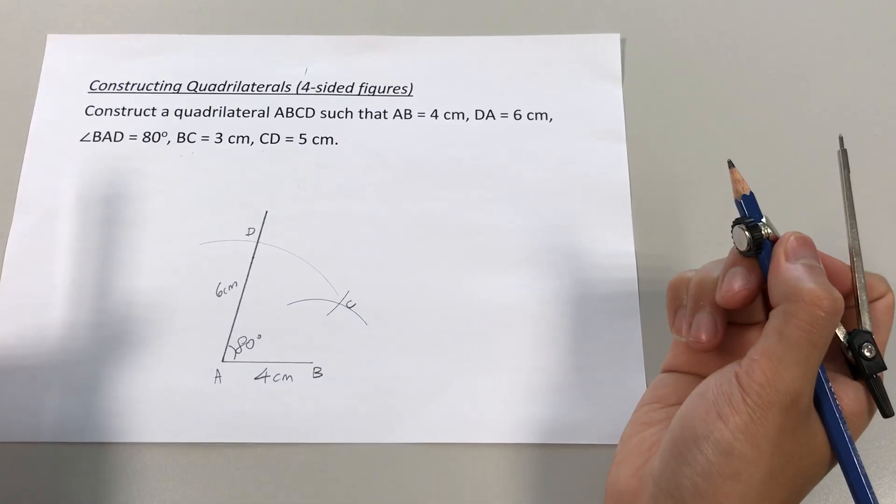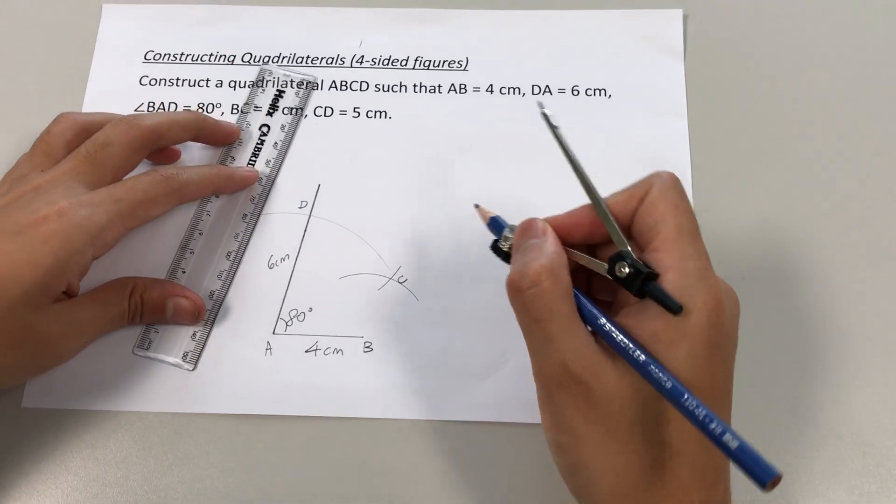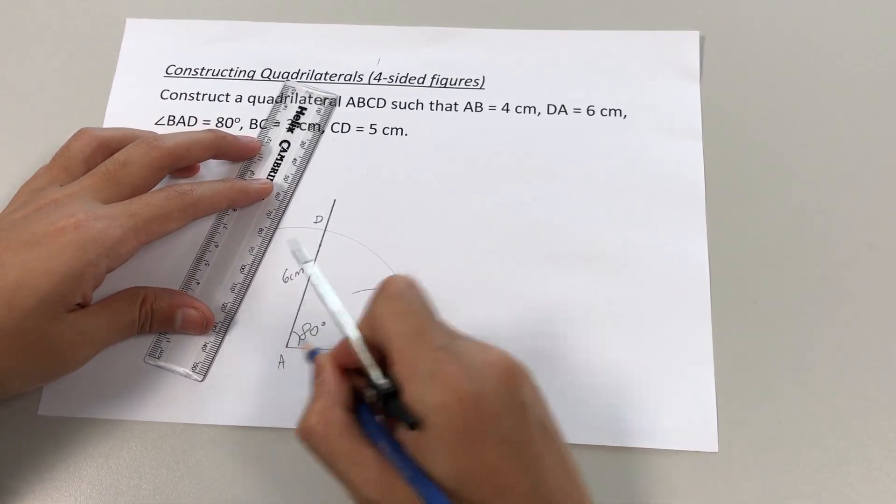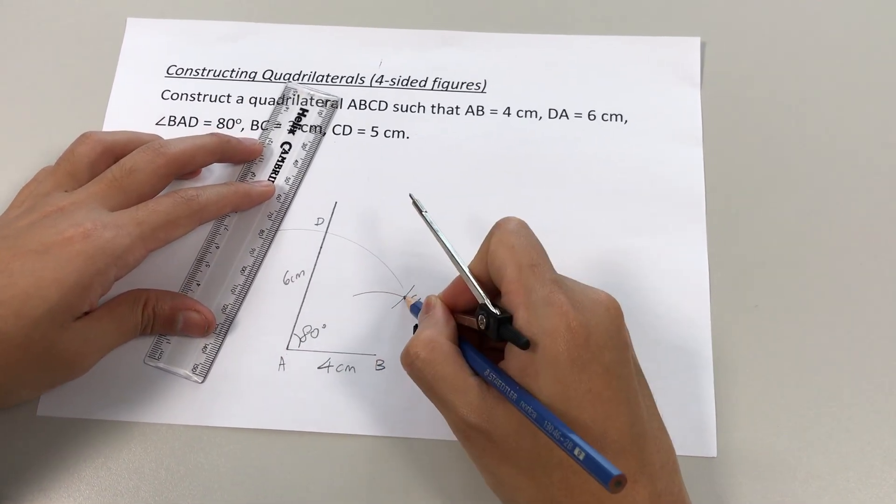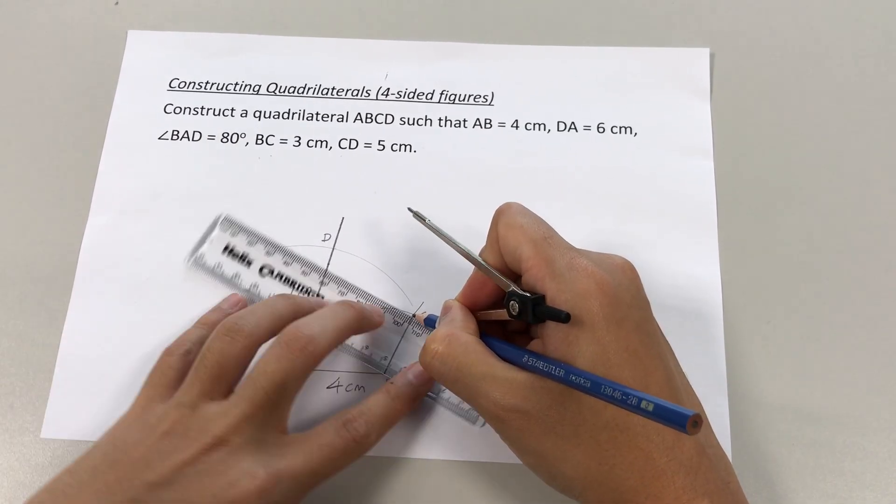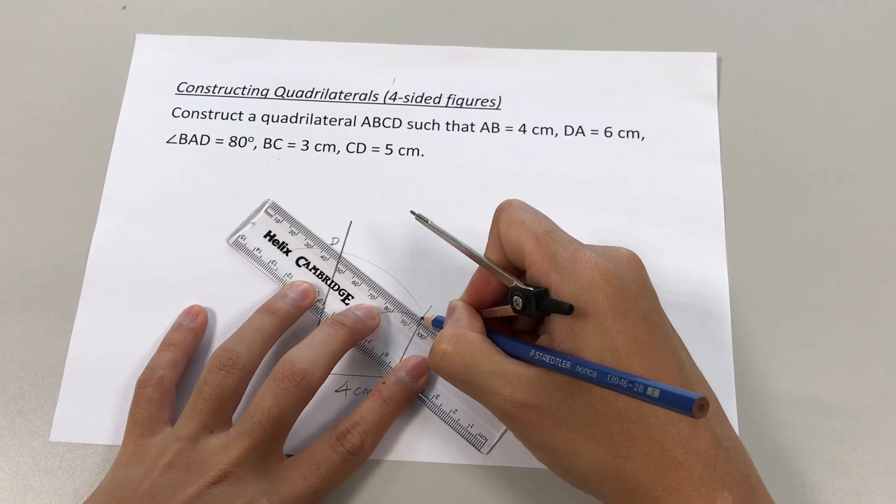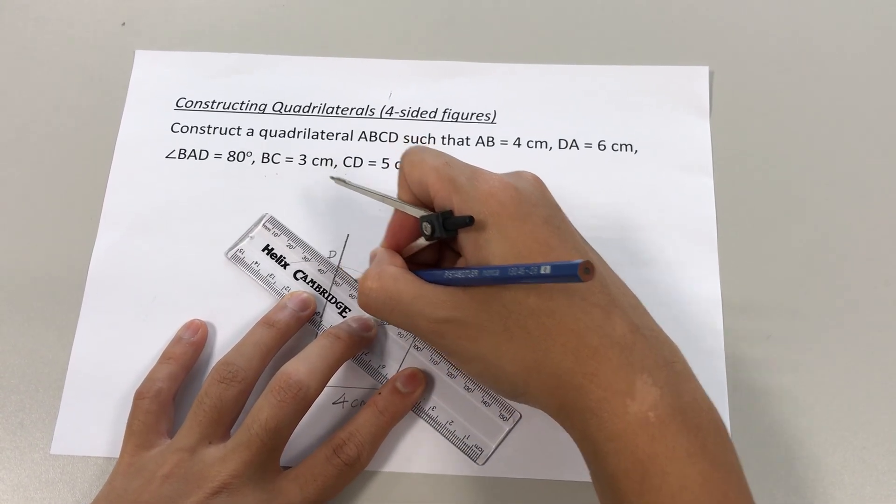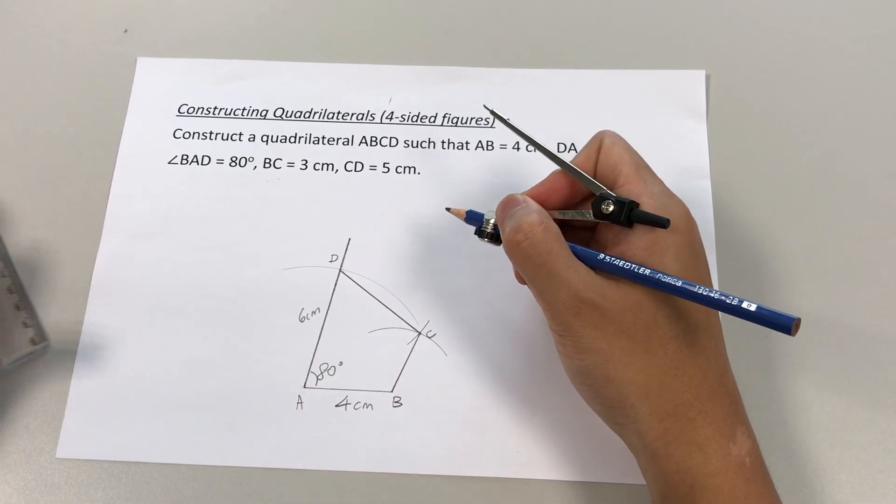All right, once I have point C, I can continue to complete my four-sided figure. A to B, B to C. Join it. And C to D.